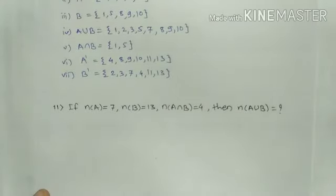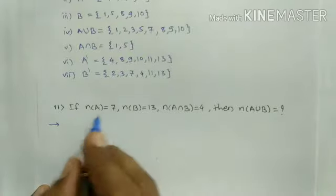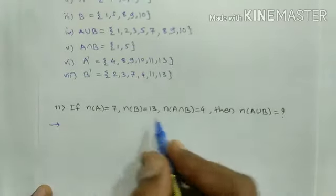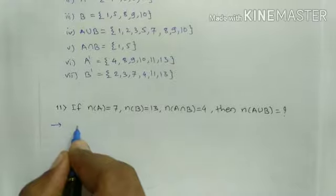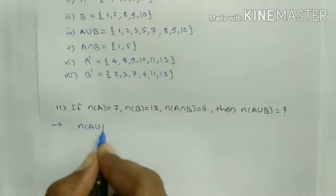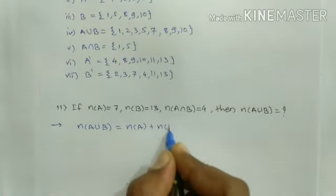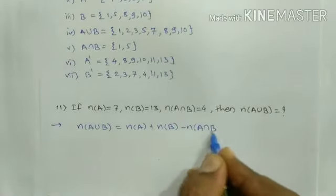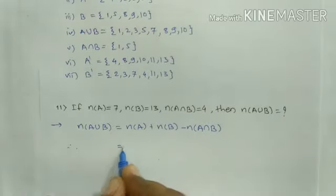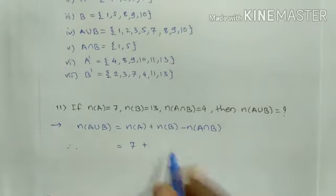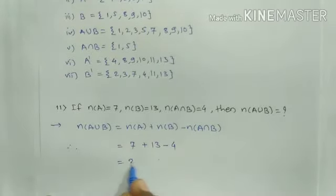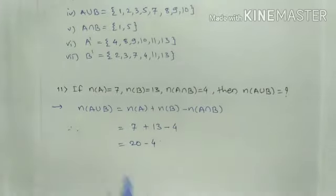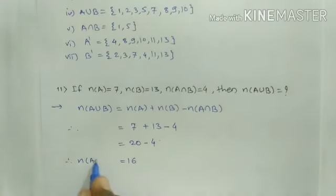The last question from this problem set is question number 11. Here n(A) equals 7, n(B) equals 13, and n(A intersection B) equals 4. We have to find n(A union B). First we write the relation: n(A union B) equals n(A) plus n(B) minus n(A intersection B). Therefore this equals 7 plus 13 minus 4, that is 20 minus 4, equals 16. Therefore n(A union B) equals 16.